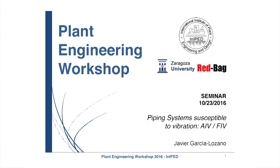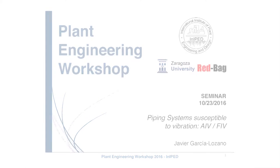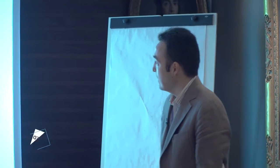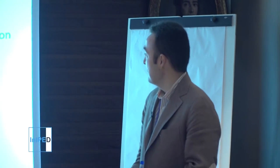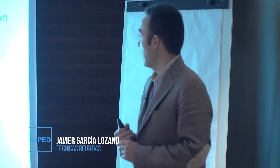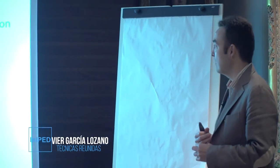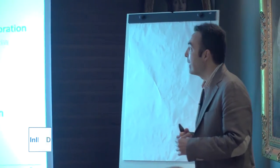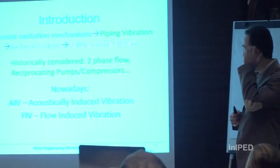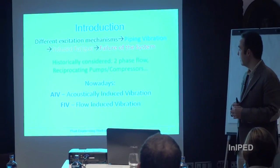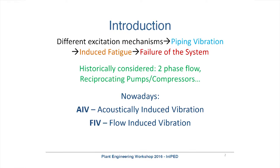Piping systems are susceptible to vibration. We know that there are different excitation mechanisms that can cause piping vibration. This piping vibration may lead to induced fatigue and finally even to the failure of the system. Historically, some mechanisms have been considered, such as two-phase flow, reciprocating pumps, compressors, etc.